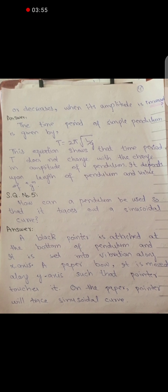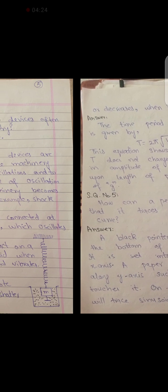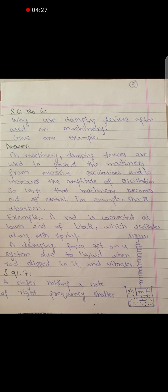Question number 5: How can a pendulum be used so that it traces out a sinusoidal curve? This is a very simple experiment. You can take a black pointer and attach it to the bottom of the pendulum, and underneath we attach a paper which moves along the axis.